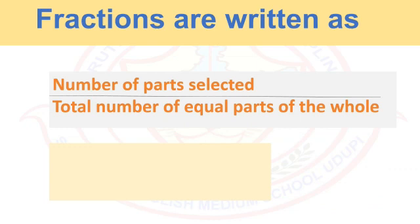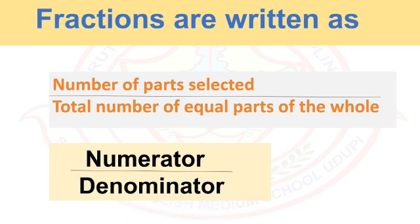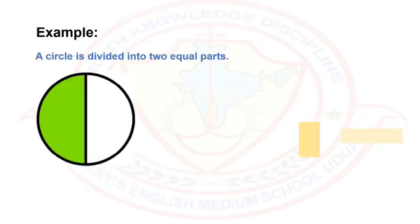That is, number of parts selected are called numerator, and the total number of equal parts of the whole are called denominator. In simple terms, fractions are written as numerator divided by denominator. Let us take an example.